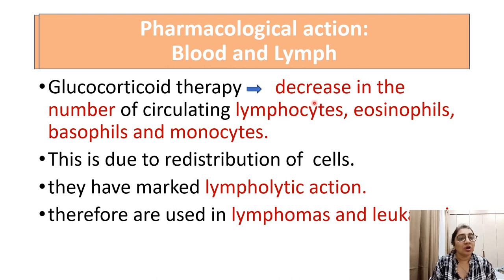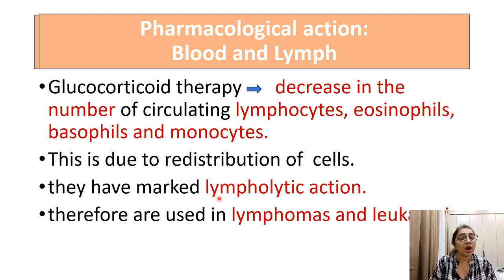Action on blood and lymph: glucocorticoid therapy decreases the number of circulating lymphocytes, eosinophils, basophils, and monocytes due to redistribution of cells. They have marked lympholytic action and are therefore used in lymphomas and leukemias.